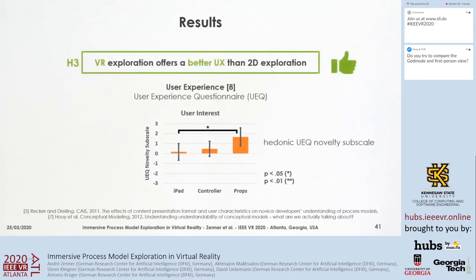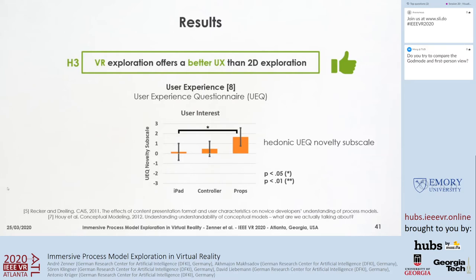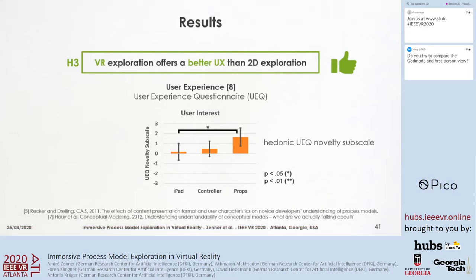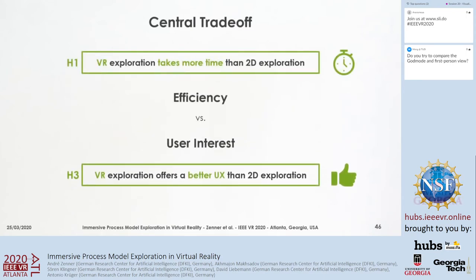Our third hypothesis can be confirmed: VR exploration offers a better user experience than 2D exploration. This was indicated by the user experience questionnaire results, specifically the hedonic UEQ novelty subscale that measures user interest. Interfaces using VR and passive haptic feedback deliver a significantly better user experience than using a 2D standard interface on an Apple iPad.